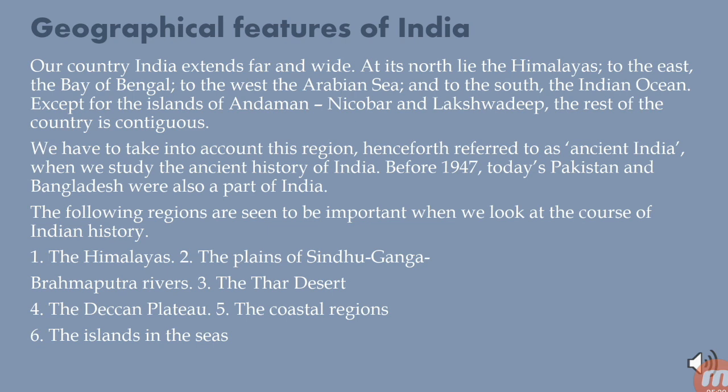Before 1947, present-day Pakistan and Bangladesh were also a part of India. The following regions are important when we look at the course of Indian history: 1. The Himalayas; 2. The plains of the Sindhu, Ganga, and Brahmaputra rivers; 3. The Thar Desert; 4. The Deccan Plateau; 5. The coastal regions; and 6. The islands in the seas. Geographic features are naturally created features of the earth, consisting of landforms and ecosystems — for example, terrain types. Human settlements or other engineered forms are considered artificial geographical features.